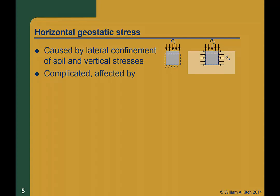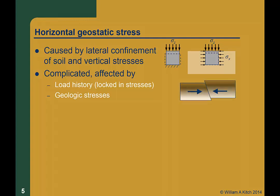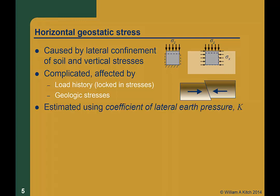In addition to Poisson's effect, the horizontal geostatic stress is complicated by many other factors including load history. When a soil is loaded and then unloaded, horizontal stresses can get locked in from the higher loads. There can also be significant horizontal stresses due to geologic conditions — for example, near a reverse fault, there can be very high horizontal stresses due to tectonic processes. Because of its complicated nature, the horizontal geostatic stress is estimated using the concept of the coefficient of lateral earth pressure, referred to as K.